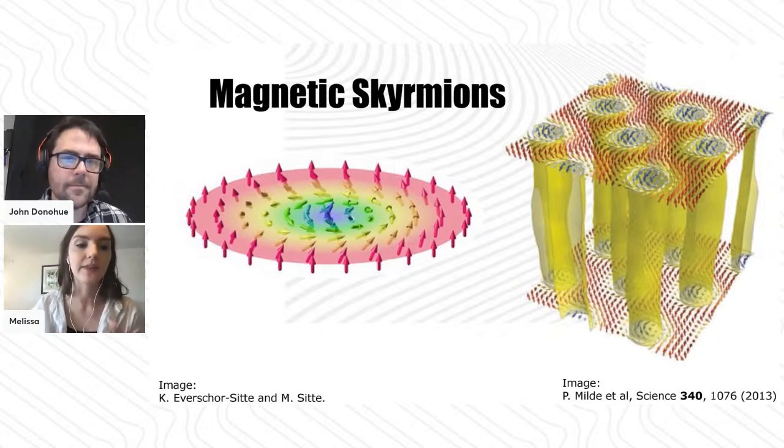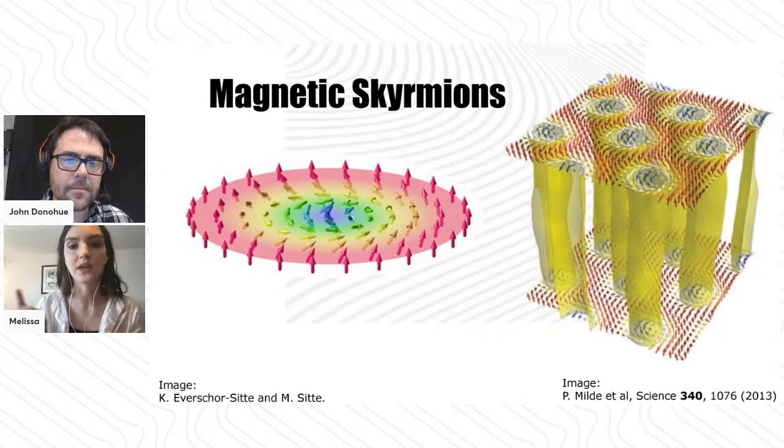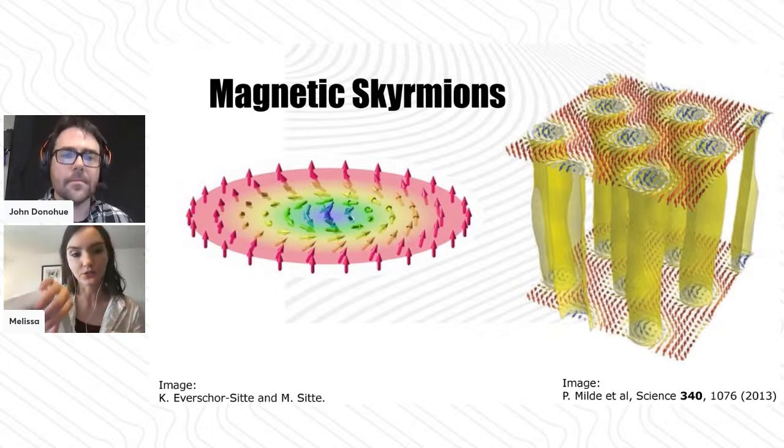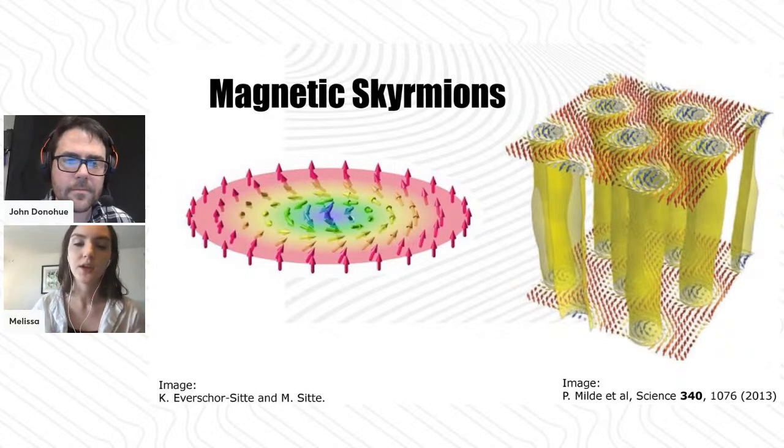The topology allows us to encode information of zeros and ones into a different degree of freedom. Perhaps we can encode the presence or absence of a skyrmion as a zero or one - that would correspond to a topology of zero or one. Or perhaps we can encode the bits of zero and one into the chirality, the winding direction of the spins. It really opens up all these new pathways for which we can encode information into these different topological and quantum degrees of freedom.